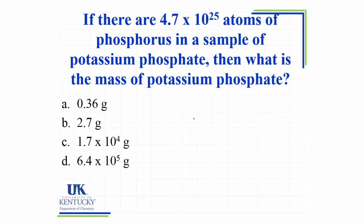Now we can use both the formula and the molar mass to figure out the mass of potassium phosphate that contains 4.7 times 10 to the 25th atoms. This is a little different than the example we just did, but remember we want to look at our units and look at what we're given. Because we are given 4.7 times 10 to the 25th atoms as the only number in the problem, that's where we need to start. Just like on the previous problem, our first goal is to convert to moles, because then we can look at the relationship between the moles of phosphorus in the compound and the moles of the compound.